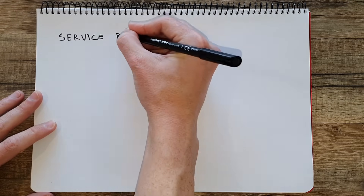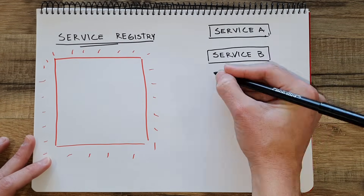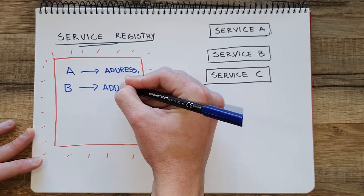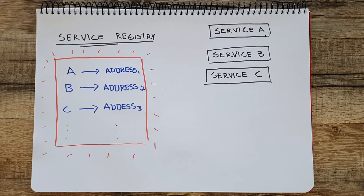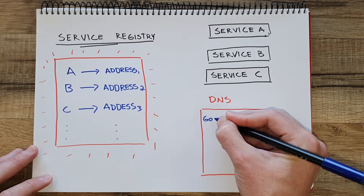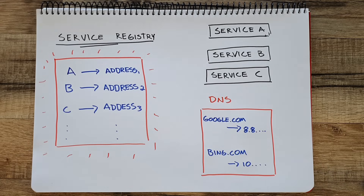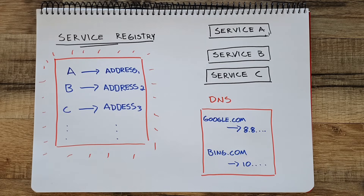Service Discovery is the process of locating resources on a network — in our case, applications or services. All forms of service discovery require some type of service registry, which is basically a database where you store the services and their associated locations. One of the oldest examples is DNS, or Domain Name Service. A DNS keeps a list of the IP addresses of a service and associates it with an alias — its name. When you go to a URL, you can resolve that to an IP address where the service is located.